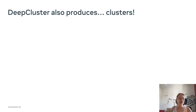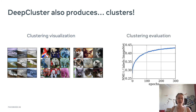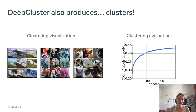Another interesting aspect of DeepCluster is that it also produces clusters, which is interesting in itself. We can visualize these clusters and evaluate them by measuring the correlation between the clusters we obtain and the real clustering of ImageNet classes. We see that this measure of correlation improves over time.